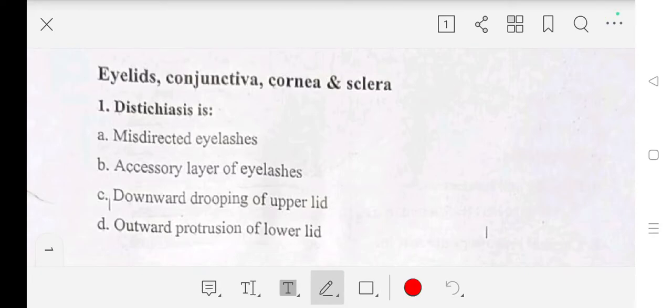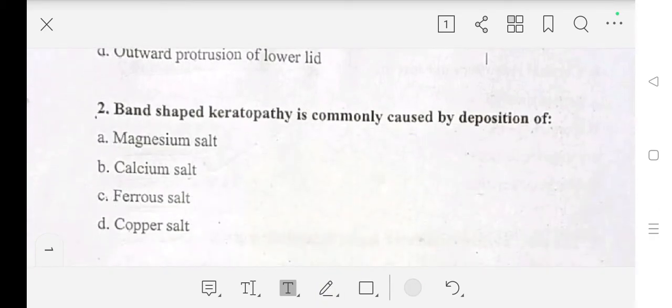Hello friends, our today's topic is eyelids, conjunctiva, cornea and sclera. First question: distichiasis is misdirected eyelashes, accessory layer of eyelashes, downward drooping of upper lid, or outward protrusion of lower lid? The answer is accessory layer of eyelashes. Second question: band-shaped keratopathy is commonly caused by the deposition of